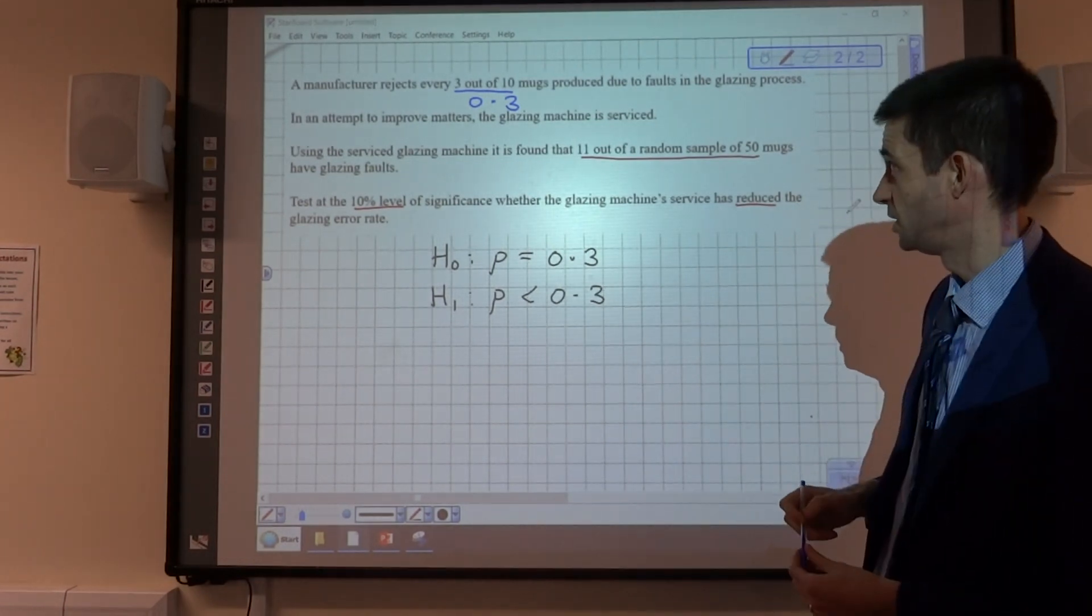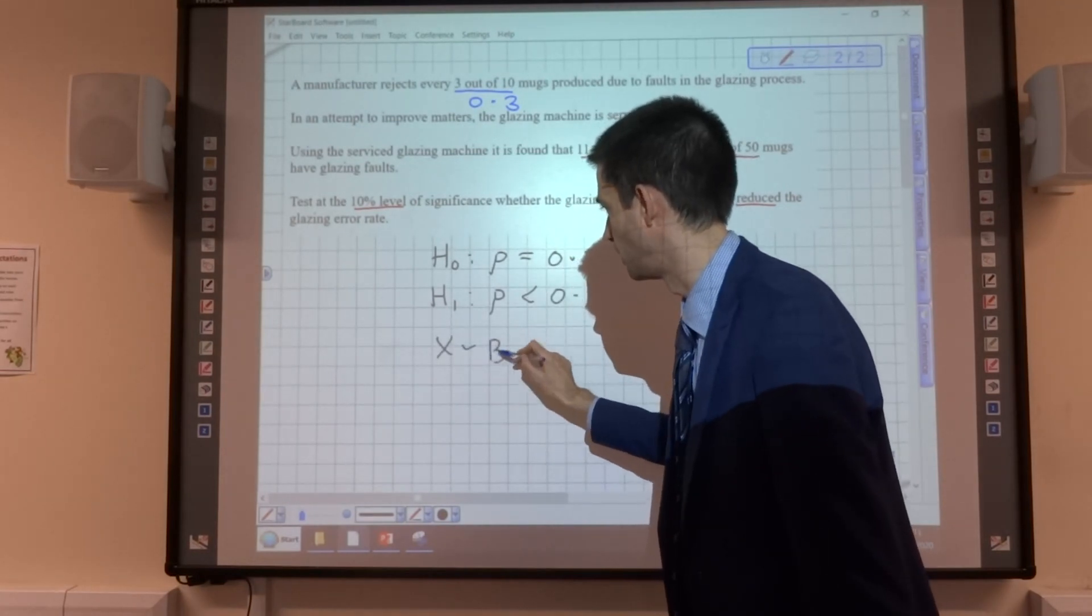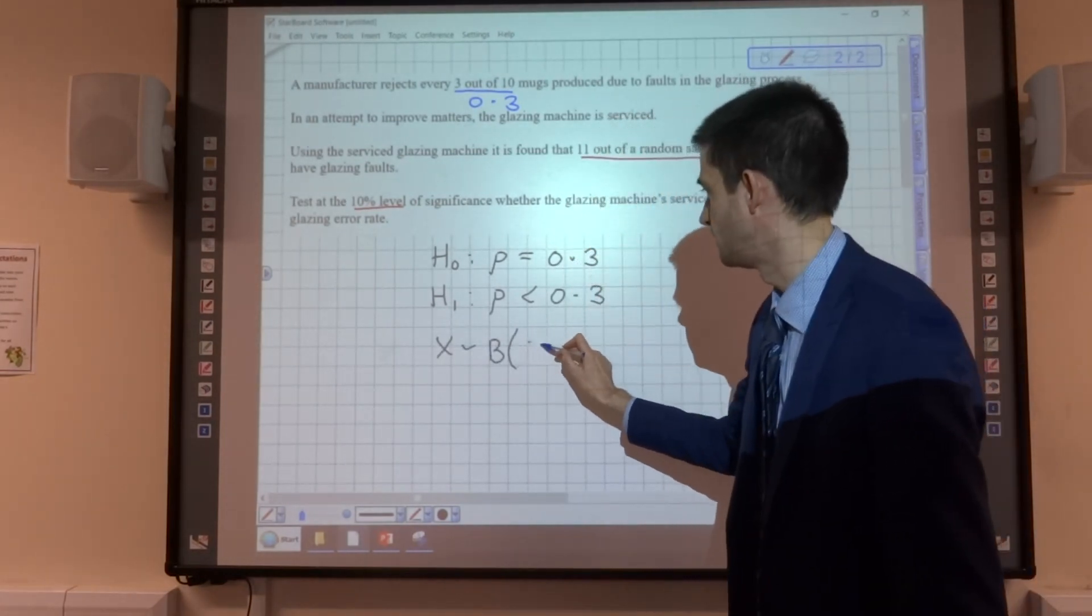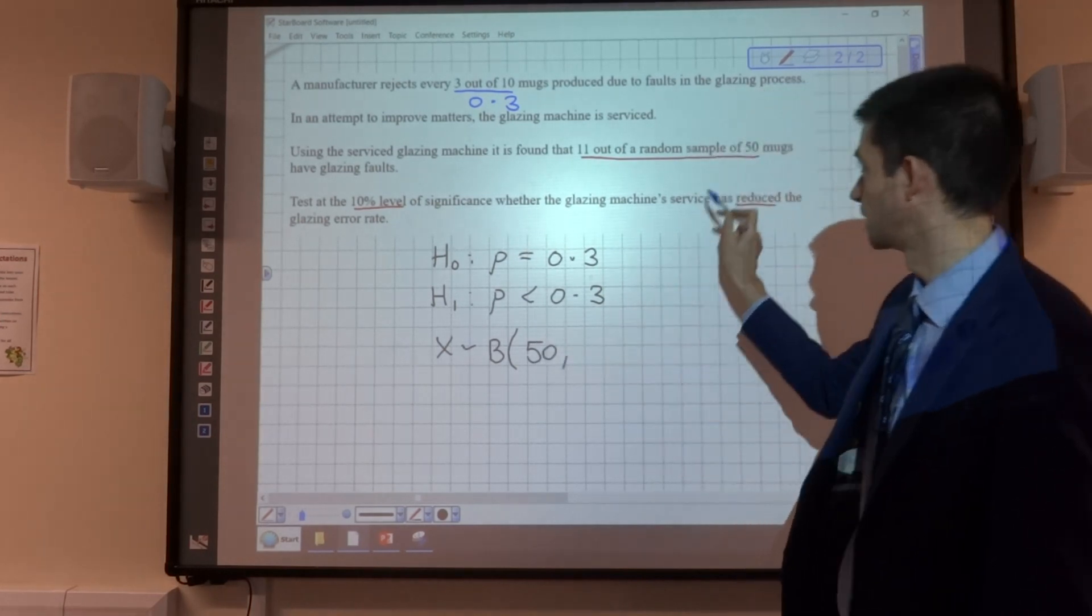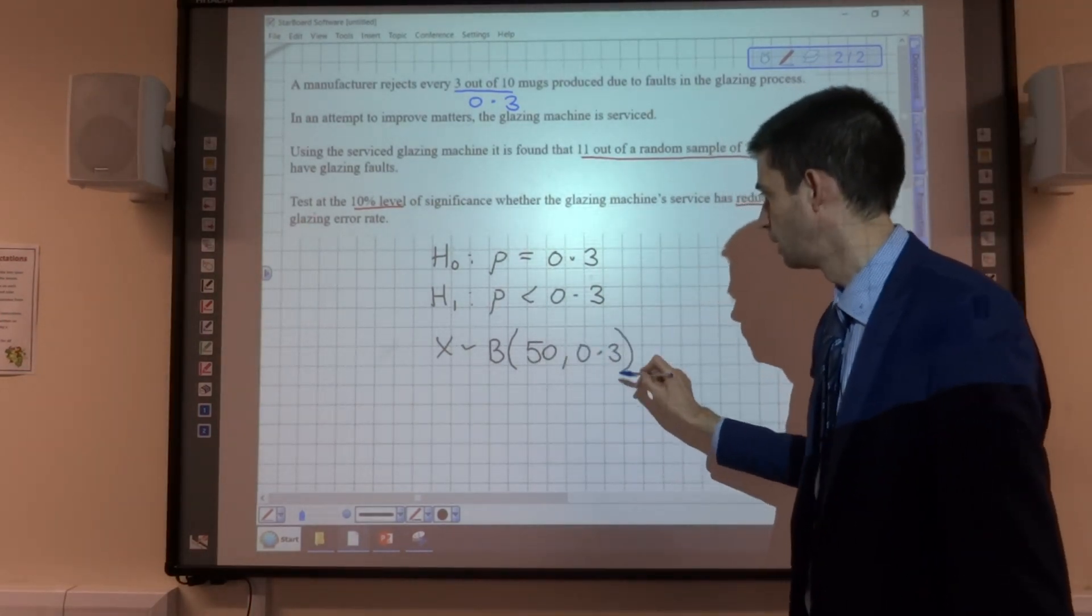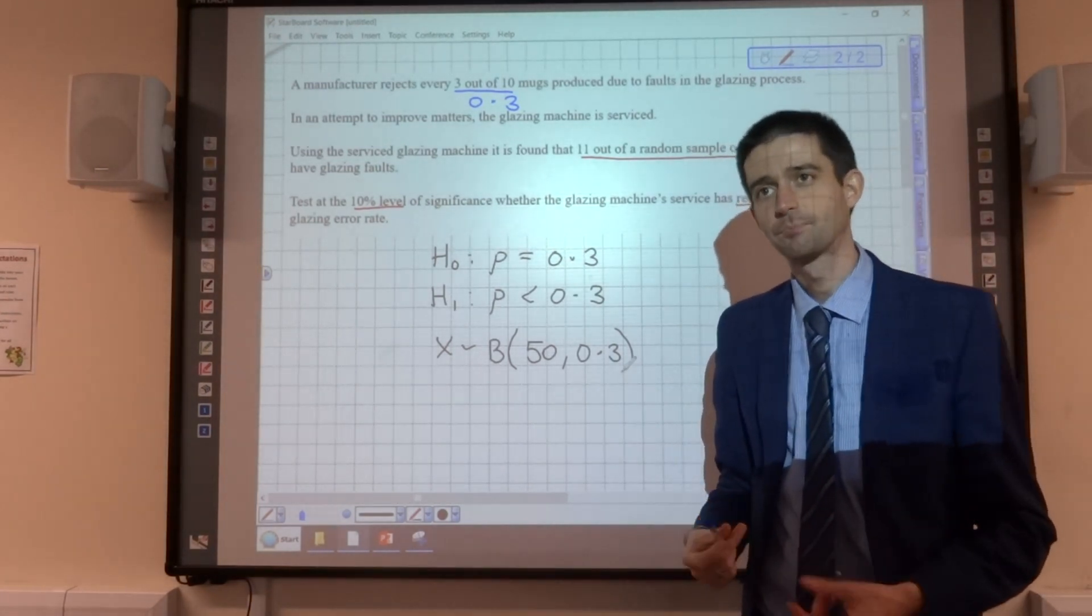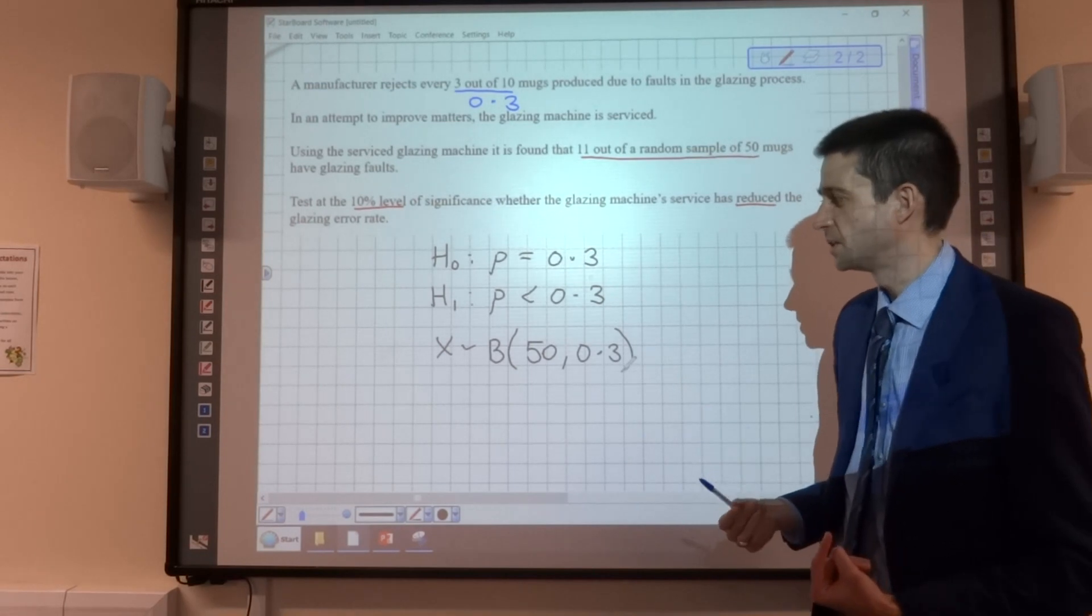And the distribution that we're going to use is X follows binomial distribution B(50, 0.3), because that's the number of mugs in the sample, 0.3, which is our assumed probability. And what we now need to do is say, OK...